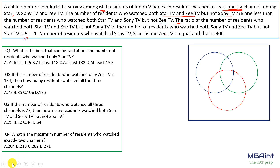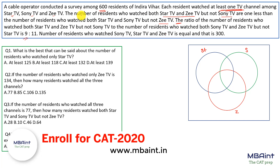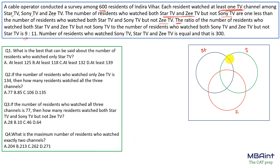Let's make the Venn diagram — three overlapping circles for Star TV, Sony TV, and Zee TV. The region for (Star TV ∩ Zee TV) but not Sony TV: let's call it X. Then the region for (Star TV ∩ Sony TV) but not Zee TV is X+1, since the first is one less than the second. The ratio of (Star TV ∩ Zee TV, not Sony TV) to (Sony TV ∩ Zee TV, not Star TV) is 9:1.